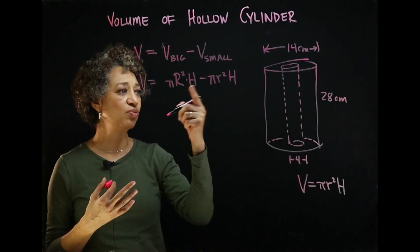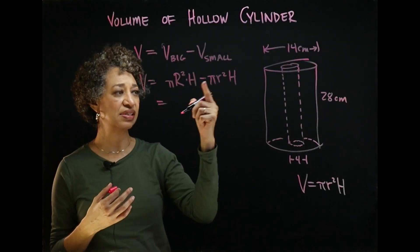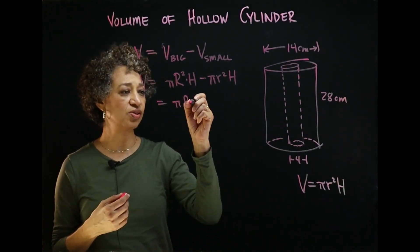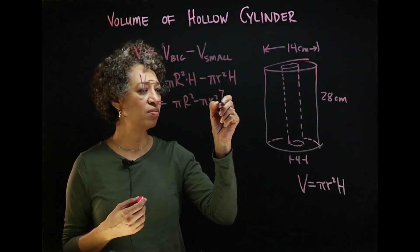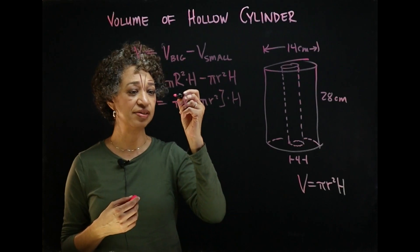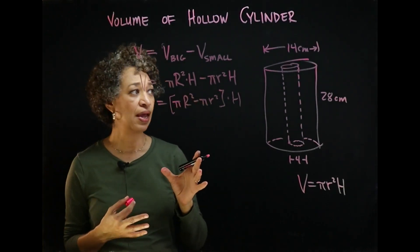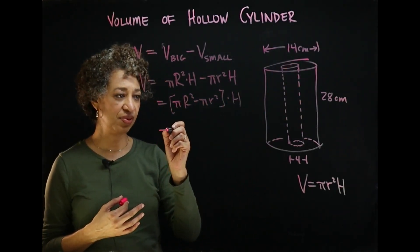Now if you like, we could go ahead and factor out this H. So we have pi big R squared minus pi little r squared, all multiplied times the height. Now I am going to plug in my numbers. Okay?